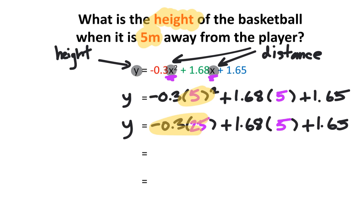Next, I'm going to be multiplying these numbers. In between the brackets and the number is actually a hidden multiplication sign. Therefore, negative 0.3 multiplied by 25 is equal to negative 7.5, while 1.68 multiplied by 5 is equal to 8.4.